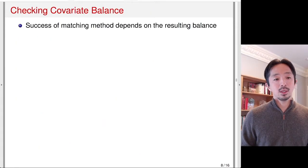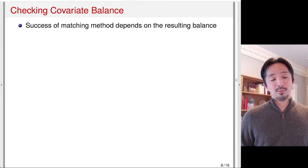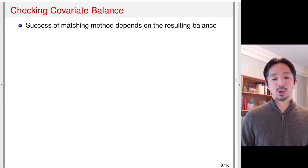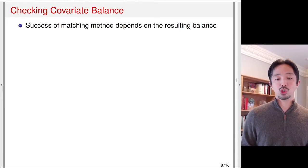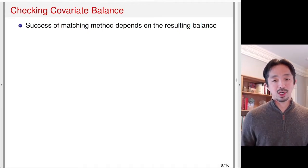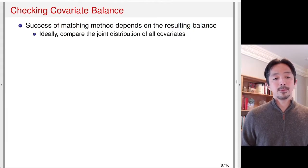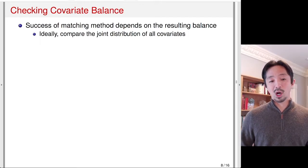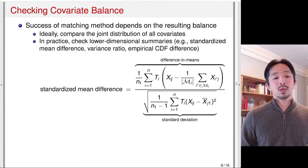For any type of matching and weighting methods, checking covariate balance is very important. You don't want to just push a software button, do matching, and assume everything worked well. You want to make sure that after matching, the treated and control groups look very similar in terms of the covariates. Ideally we want to compare the joint distribution of all covariates at once, but that's impossible because it's a high-dimensional histogram. In practice, we check lower-dimensional summaries.